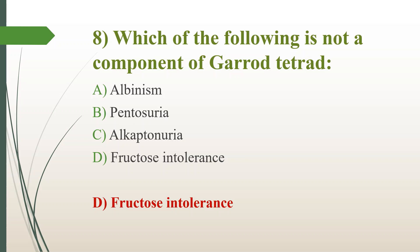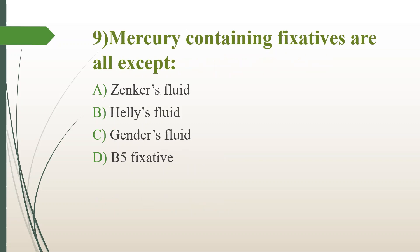Ninth question: Mercury-containing fixatives — all except which option? Option A, Zenker's fluid; option B, Helly's fluid; option C, Zenker's fluid ("generous fluid"); option D, B5 fixative. The answer is option C — "generous fluid" (Zenker's fluid variant) is a picric acid-containing fixative, not mercury-containing. The others are mercury-containing fixatives. Bouin's fluid and Rossman's fluid are also examples of picric acid-containing fixatives.